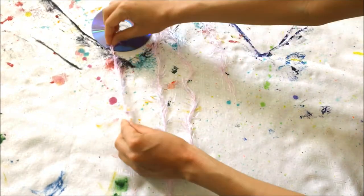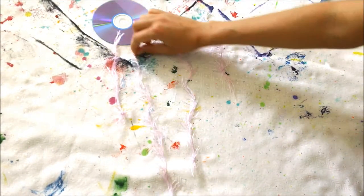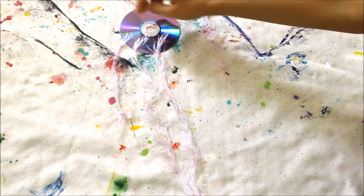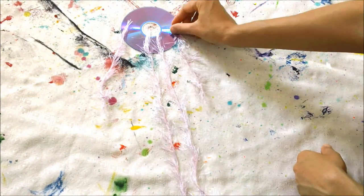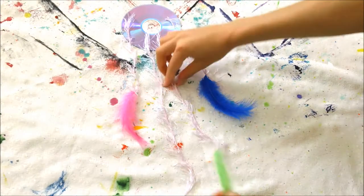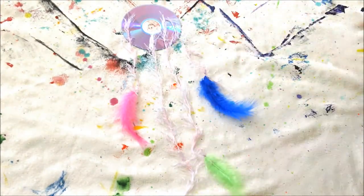On the label side of the CD, place the strings to resemble the shape of a dream catcher. The shorter strings on the outside and the longer strings in the middle.